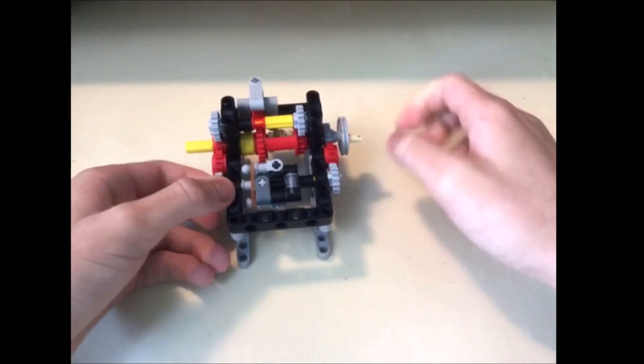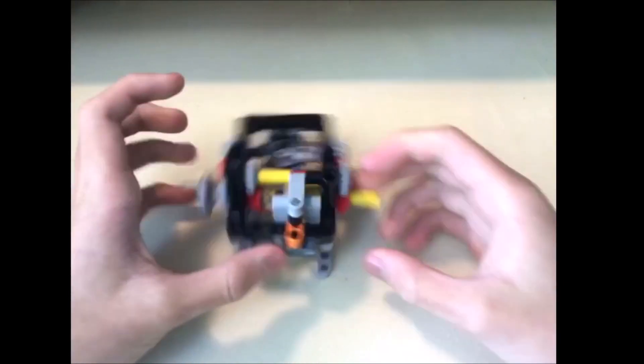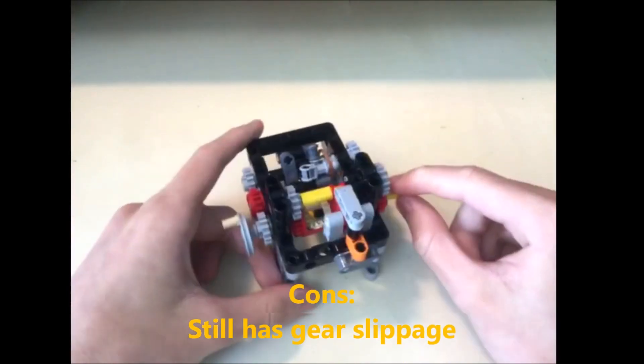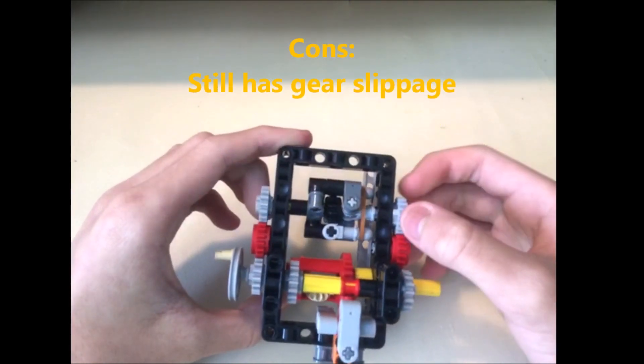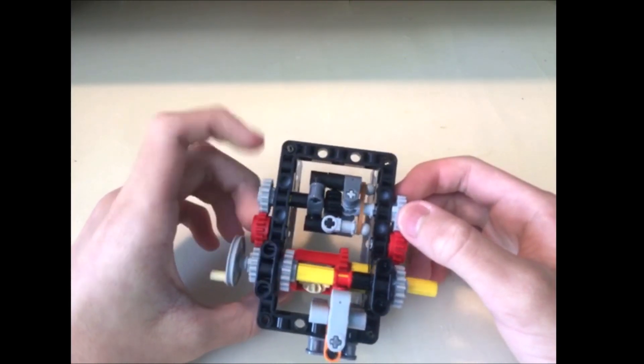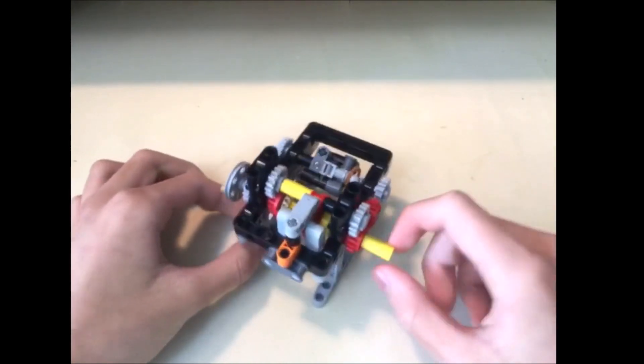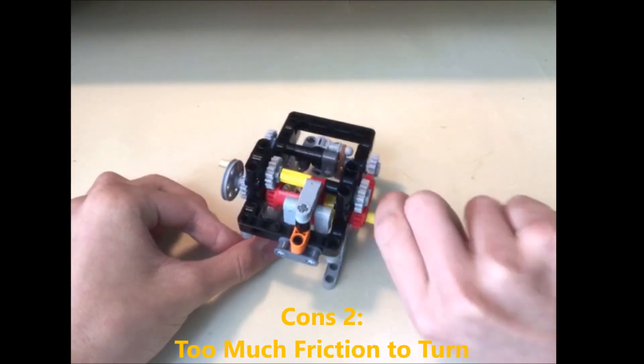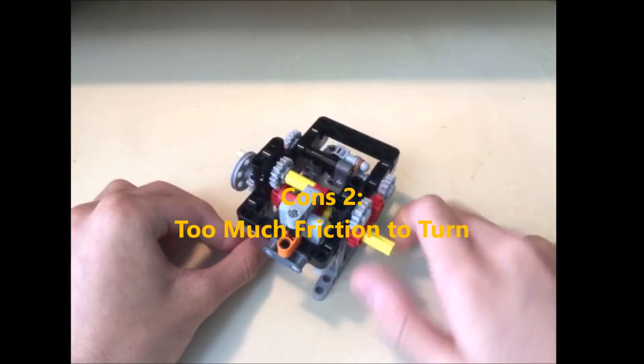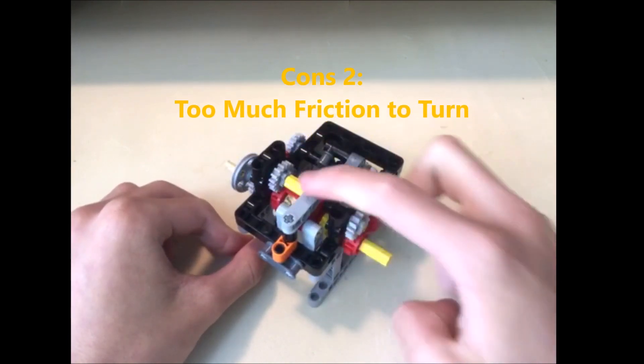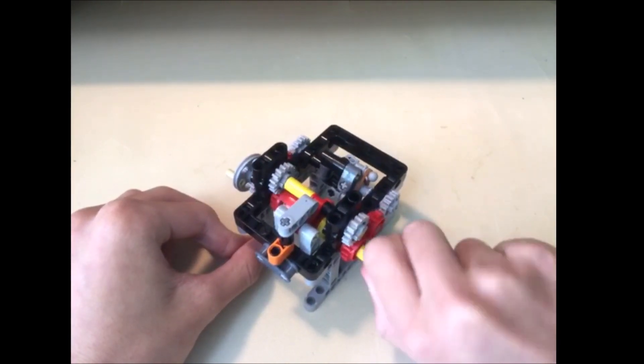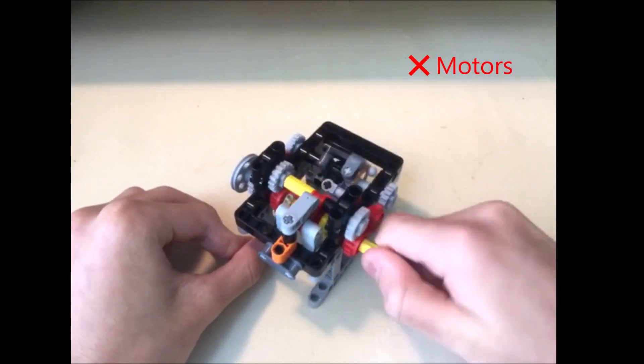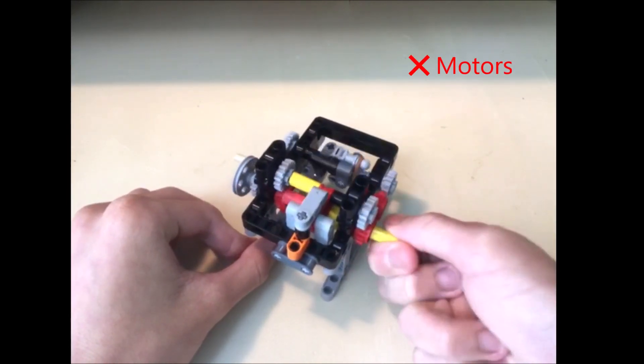Okay, time for the cons of this gearbox. Yes, the first one is the 4% gear slippage. I think it can be fixed. But the other con is that the output axle is connected by a lot of gears from the input axle. So yeah, the friction is quite big. I do not recommend using motors to power it.